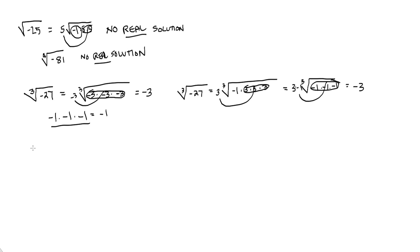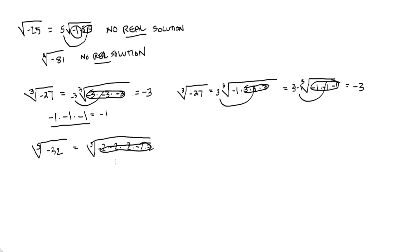Let's do one more just to be safe. How about the 5th root of negative 32? I can write negative 32 as negative 2 times negative 2 times negative 2 times negative 2 times negative 2 — five negative 2s. Pull out one of them, and my answer is negative 2. You could also write it as negative 1 times 2 times 2 times 2 times 2 times 2, pull out the 2, and then realize that negative 1 can also be factored as negative 1 times negative 1 times negative 1 times negative 1 times negative 1.